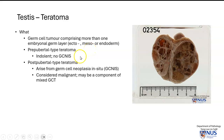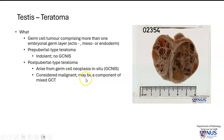There are two main types. The prepubertal type, which usually is indolent, and it is not associated with the background of germ cell neoplasia in situ. And then there is the more common postpubertal type, which does arise from germ cell neoplasia in situ, and this is considered malignant. It may also be mixed with other components of germ cell tumours, for example, yolk sac tumour or embryonal carcinoma.